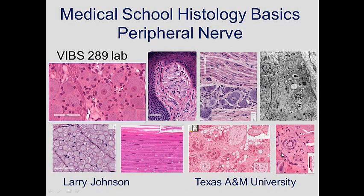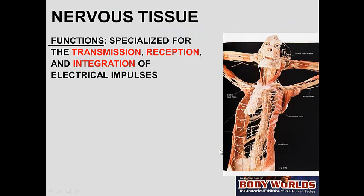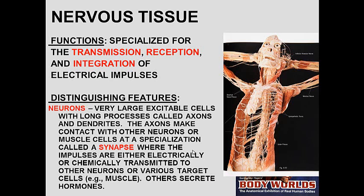Today we're going to talk about peripheral nerve, and you can see various nerve cells here and receptors. So what's the function of nerves? Nerves are specialized cells for transmission, reception, and integration of electrical signals. So they transmit, they receive, and they integrate signals to coordinate activities of the body.